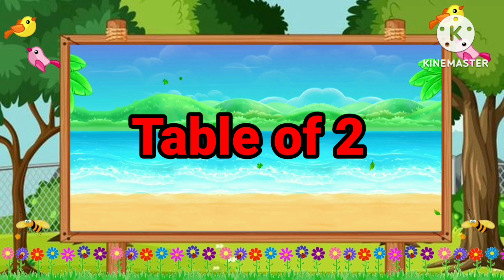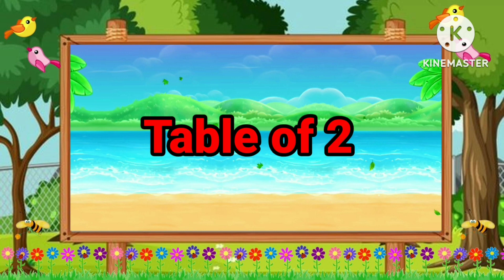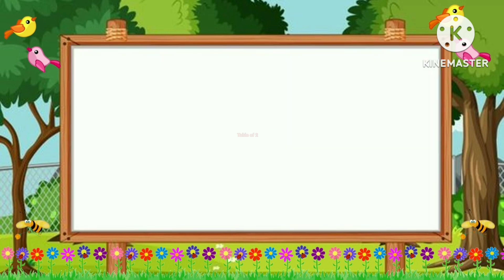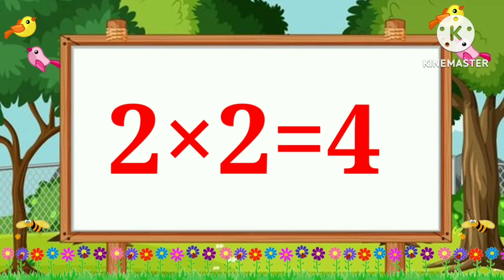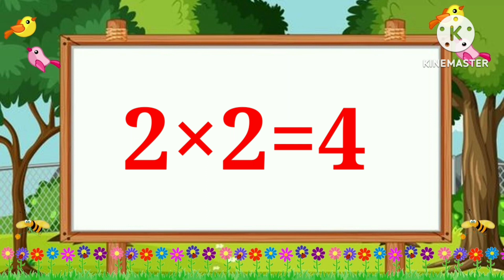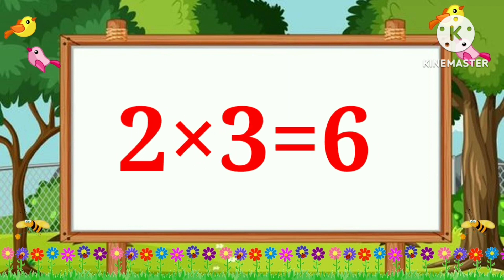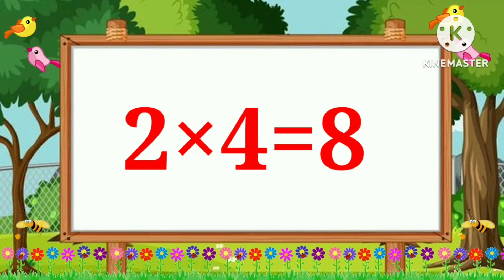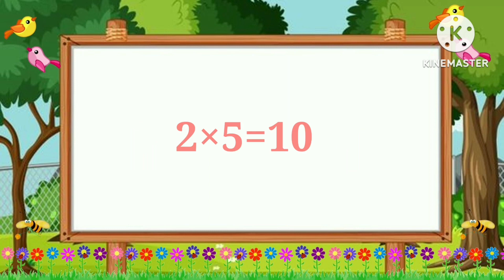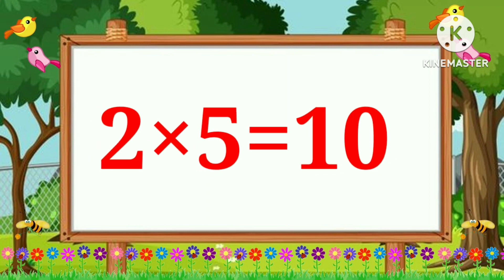Table of Two. Two one's are two. Two two's are four. Two three's are six. Two four's are eight. Two five's are ten.